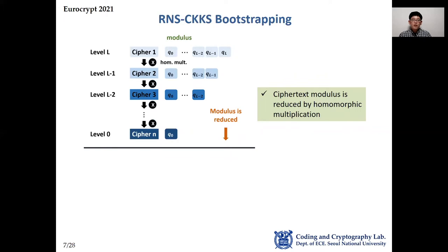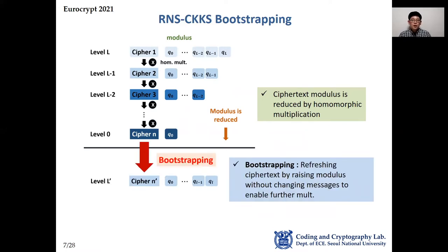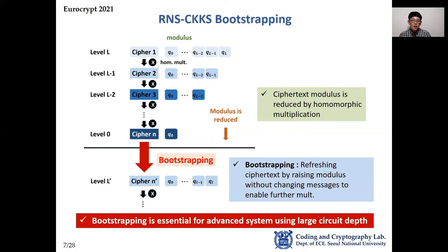There is an essential homomorphic operation called bootstrapping. In the process of homomorphic multiplication, the number of moduli in the ciphertext is reduced by one—each multiplication consumes one RNS modulus. When the ciphertext modulus reaches only one RNS modulus, no further homomorphic multiplication can be performed. The bootstrapping is the solution: it refreshes this level-0 ciphertext by raising the modulus without changing messages, enabling further multiplication. For advanced circuits with large multiplicative depth, bootstrapping is inevitable.